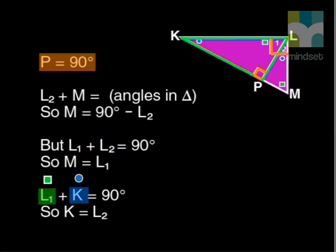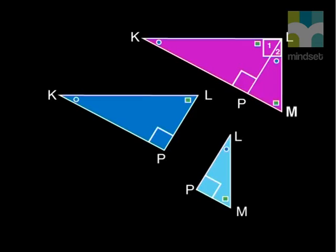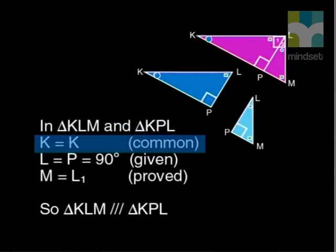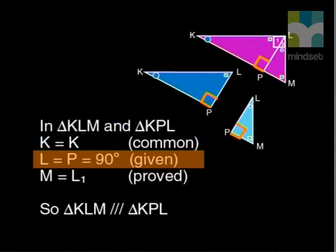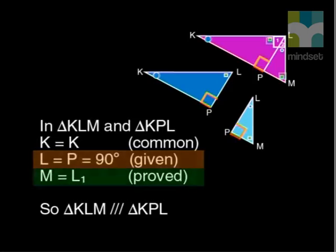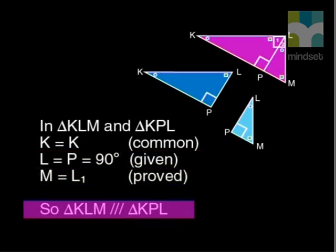And L1 plus K is 90 in triangle KPL. So, K must be equal to L2. So, have we found equiangular triangles? We certainly have. In triangles KLM and KPL, we have K is common to both, L and P are both 90 degrees, and M equals L1. So, these triangles are equiangular and therefore similar.